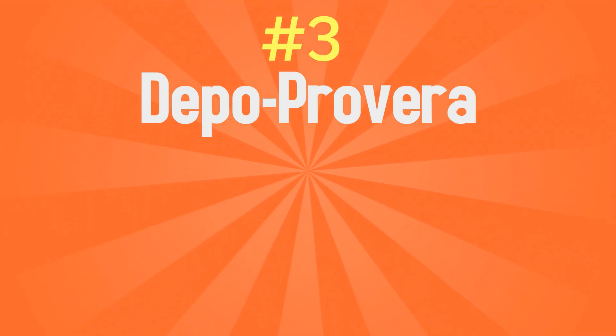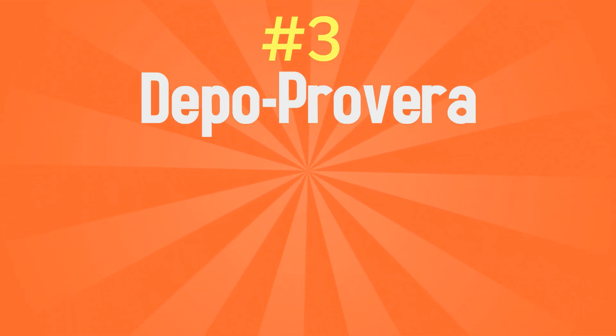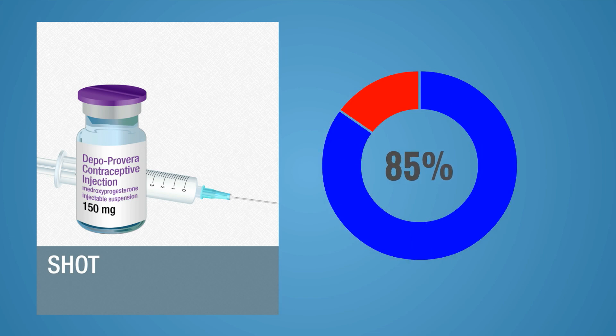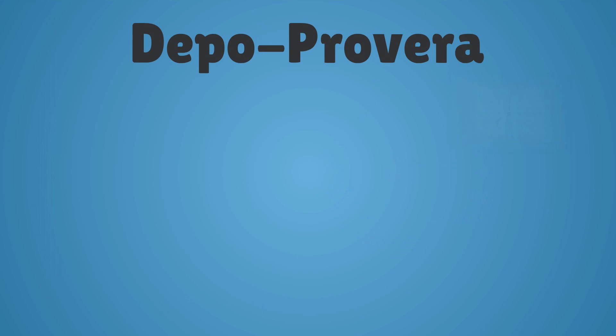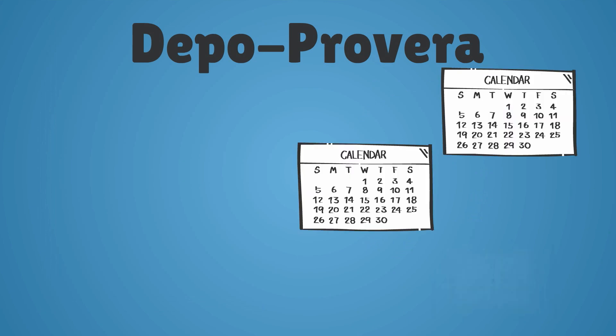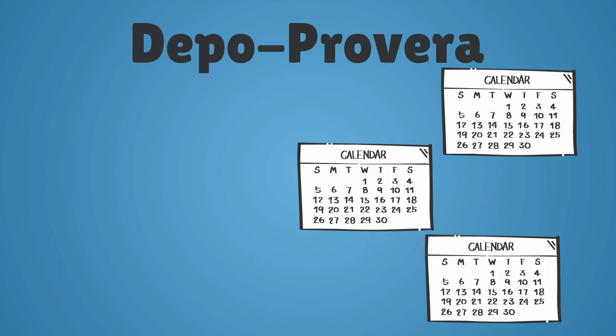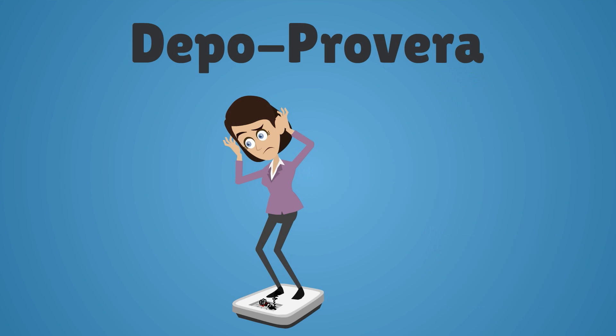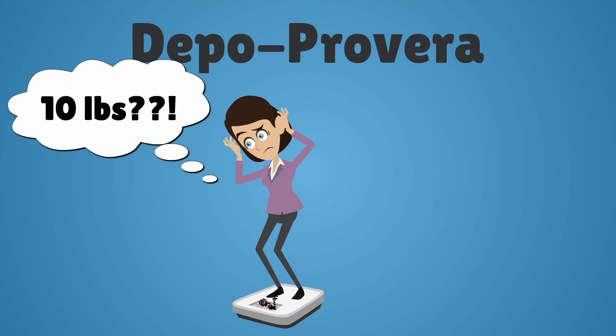Number three is the Depo-Provera injection. This is a progesterone injection that lasts for three months and is about 97% effective. Women return to clinic every three months to receive the shot. Many women become amenorrheic on Depo-Provera, and it can take several months for fertility to return after terminating this method. It is important to counsel patients that the average weight gain with the Depo-Provera shot is 10 pounds.